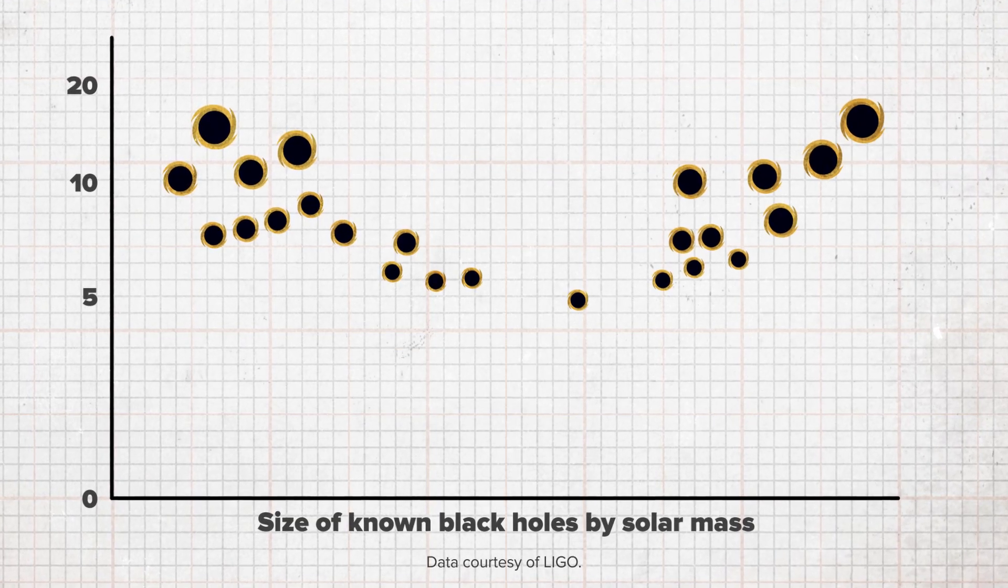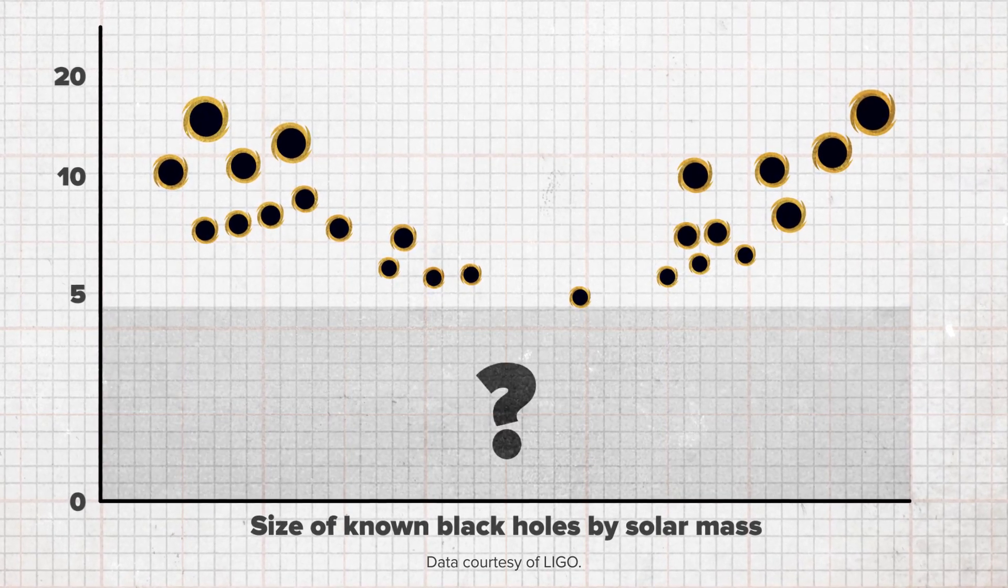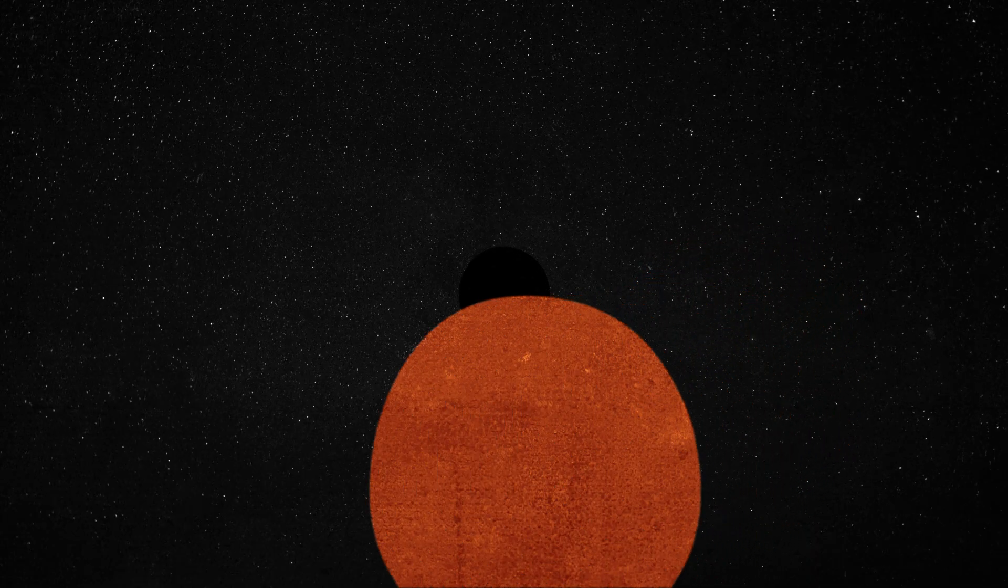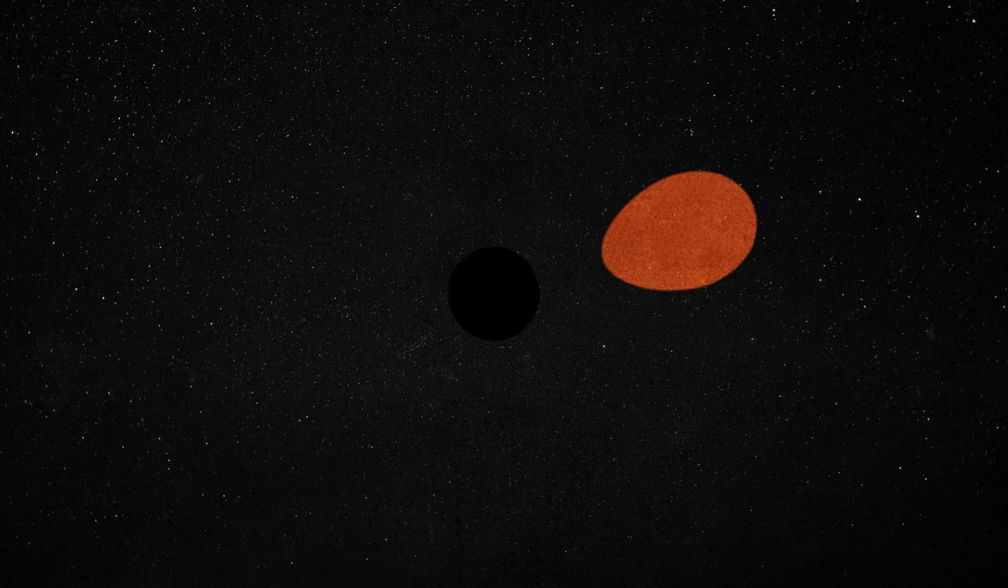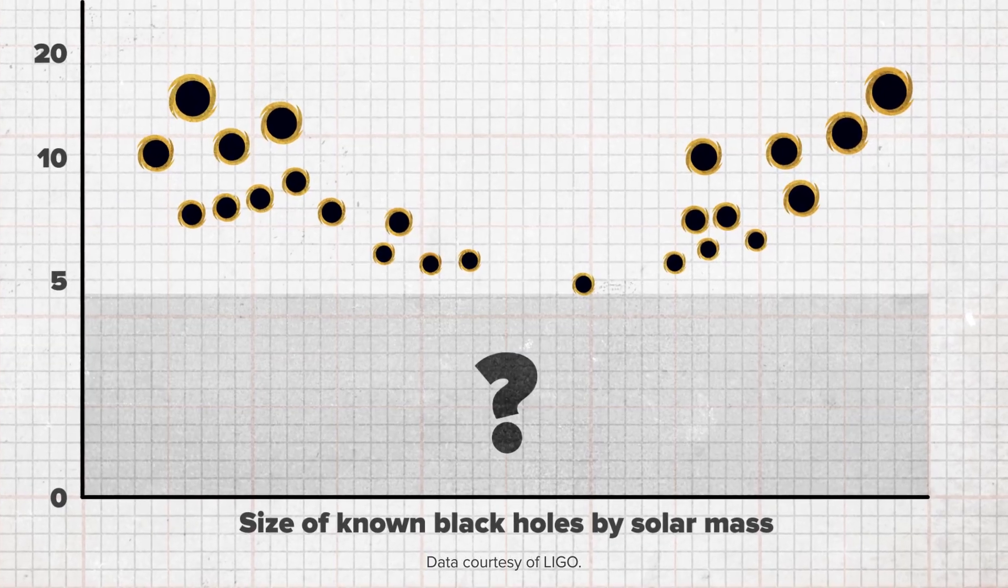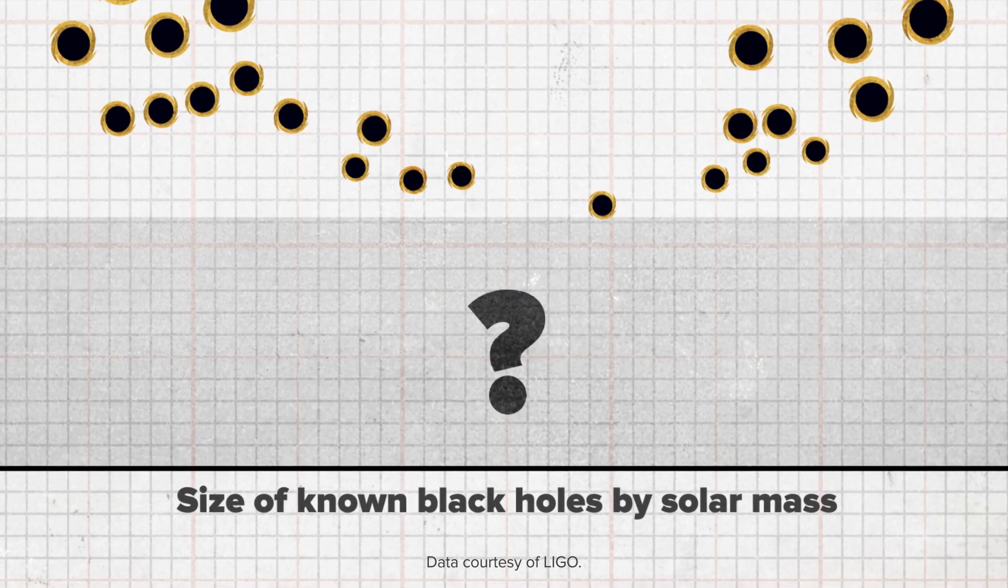Scientists believe there are many more black holes in the universe we haven't identified yet. Black holes that aren't interacting with a star and have very little X-ray activity. From theoretical models, we know that there are thousands of these non-interacting black holes in the galaxy. And scientists from all over the world are very interested in finding these non-interacting black holes.